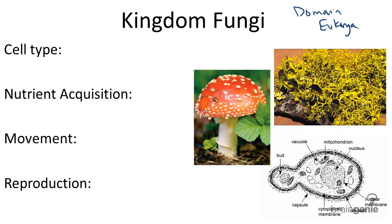Fungi have a little bit more complexity than protists. So let's define them on the left. Their cell type is eukaryotic, meaning they have complex cell structures such as a nucleus and membrane-bound organelles like mitochondria.